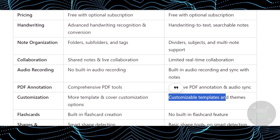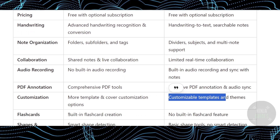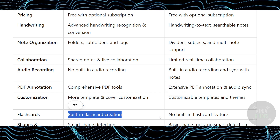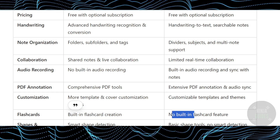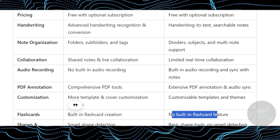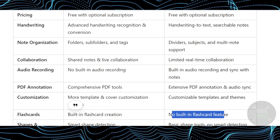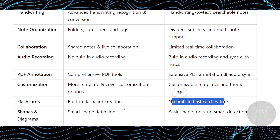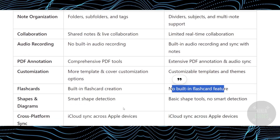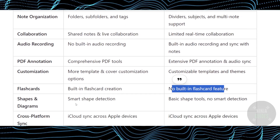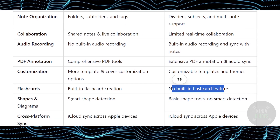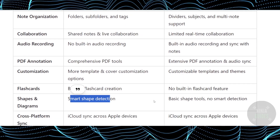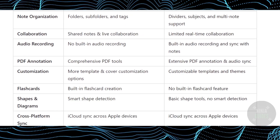For flashcards, GoodNotes 6 has a built-in flashcard section, but there is no built-in flashcard section in Notability. For shapes, GoodNotes 6 gives you smart shape detection.